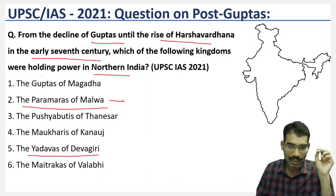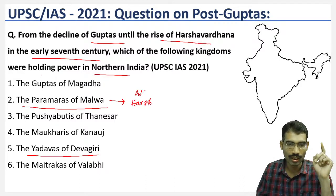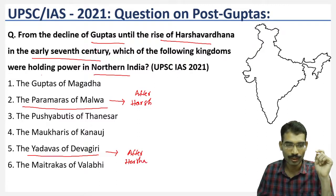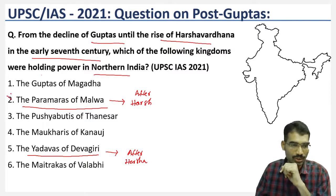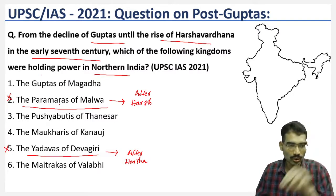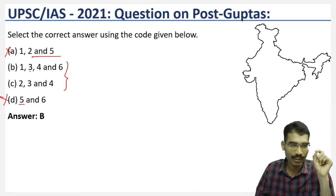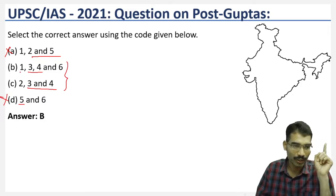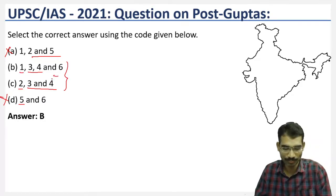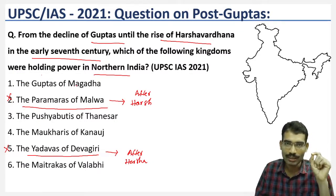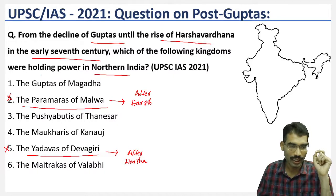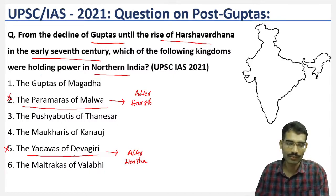Both the Yadavas of Devagiri and the Paramaras of Malwa belong to a period after Harshavardhana, so these two options can be eliminated. The question asks specifically from the decline of the Guptas until the rise of Harshavardhana, meaning options 2 and 5 are gone, immediately giving us a 50% advantage. The remaining options to examine are 1, 3, 4, and 6: Guptas of Magadha, Pushyabhutis of Thanesar, Maukharis of Kanauj, and Maitrakas of Vallabi — all answerable from 6th and 7th standard content.